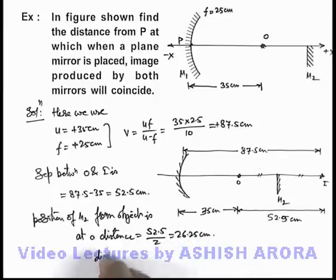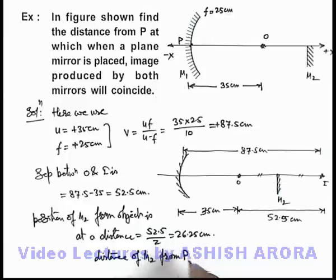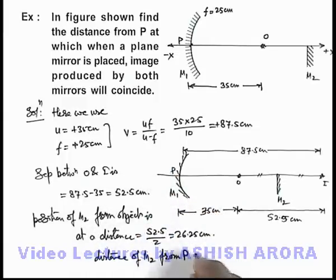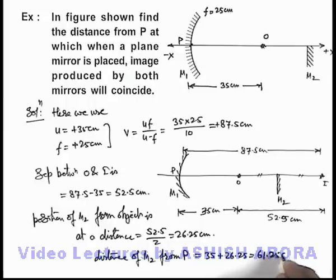So if we calculate the distance of M2 from P, that is the pole of this mirror M1, that can be written as 35 plus 26.25, which is equal to 61.25 centimeters. That is the answer to this problem.